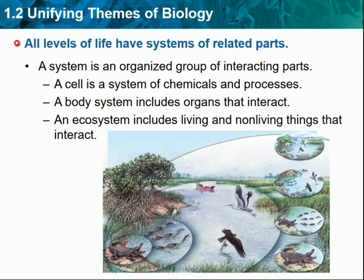Second Main Idea: All levels of life have systems of related parts. Think about the separate parts of a car — tires, engine, seats, and so on. Even if you have a complete set of car parts, you might not have a functioning car. Only when all of the parts are put together in the correct way do you have a working car. A system is an organized group of related parts that interact to form a whole. Systems exist on all scales in biology, from molecules that cannot be seen, to cells that can only be seen with a microscope, to a biosphere.